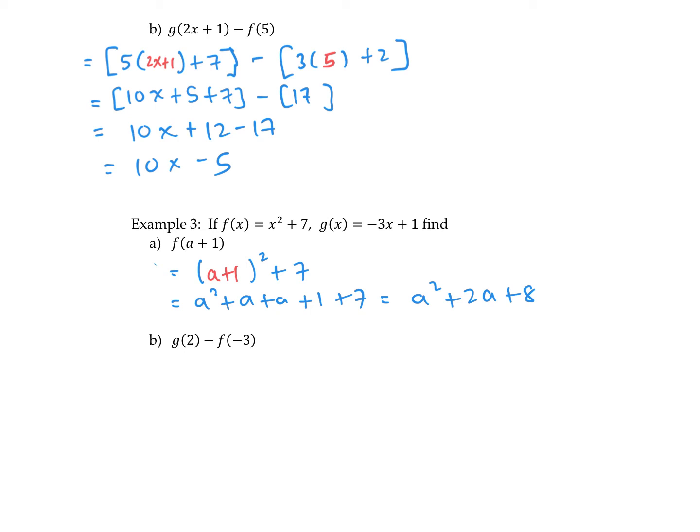In example 2, it wants us to do g of 2. So g is negative 3x plus 1. Replacing x with a 2, minus f of negative 3. So x squared plus 7, replacing x with a negative 3. In this bracket we have negative 6 plus 1 is negative 5, minus. In this bracket we have negative 3 squared is positive 9 plus 7 is 16. And negative 5 minus 16 is negative 21.